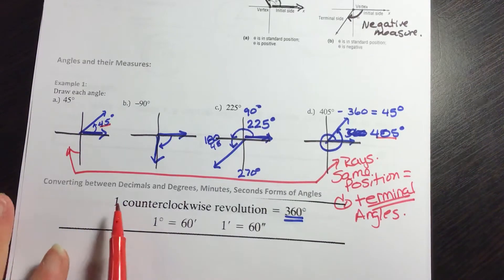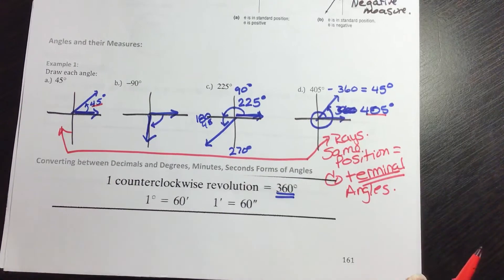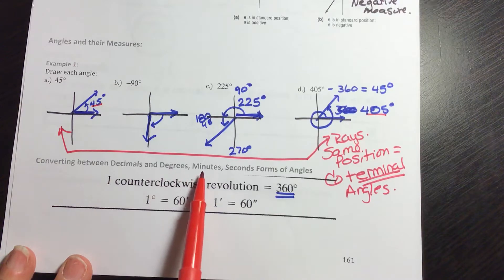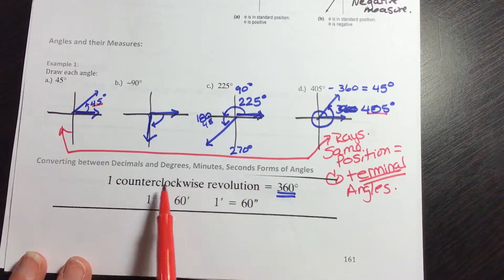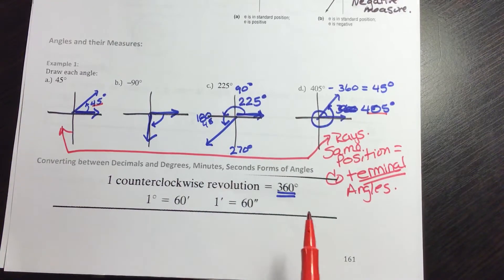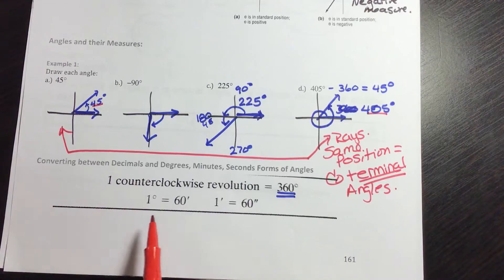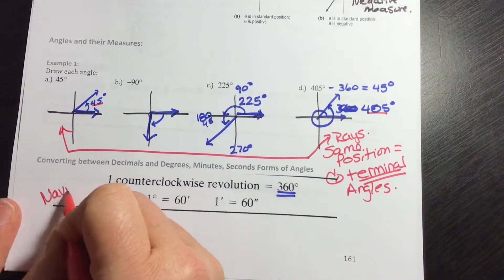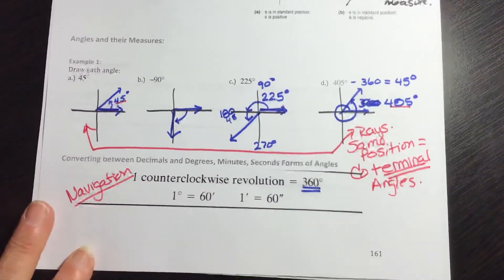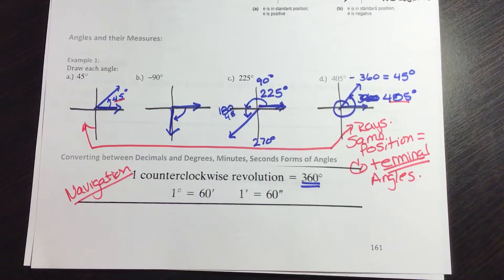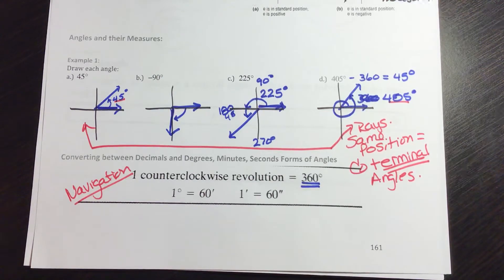Now we're looking at converting between decimal degrees and another unit of angle measure: degrees, minutes, and seconds. There are three ways to measure angles — degrees, degrees-minutes-seconds, and radians, which we'll talk about shortly. The degrees-minutes-seconds system is used mostly in navigation, such as for sailboats, ships, or airplanes changing direction.